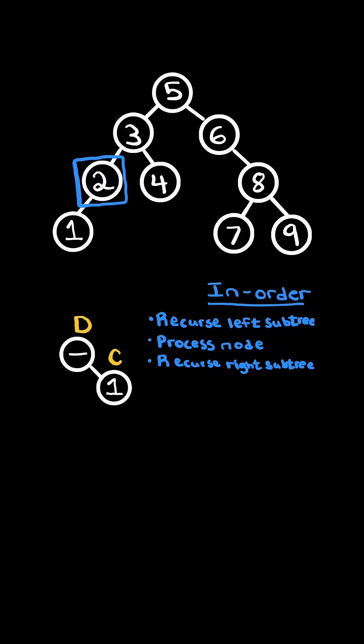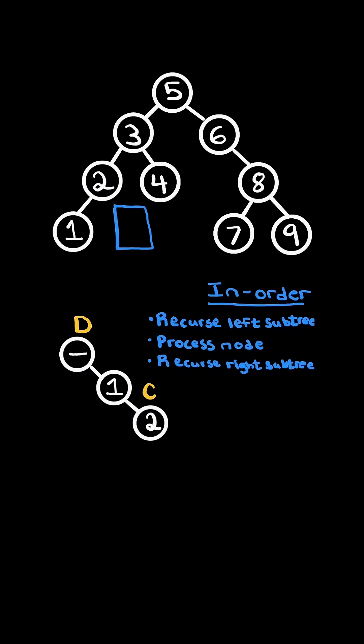So we go up the stack and process the node. We first set its left node to null, and we set current dot right equaling the node. Finally, we set current equaling the node, and we continue the inorder traversal and recurse on the right subtree.